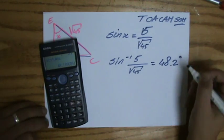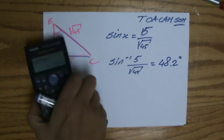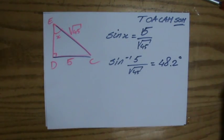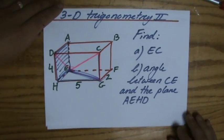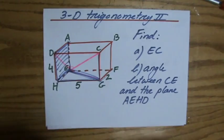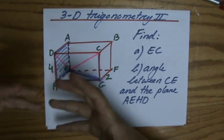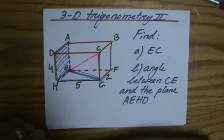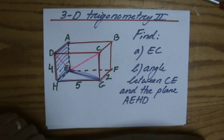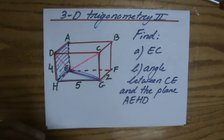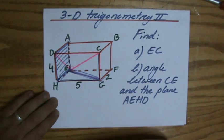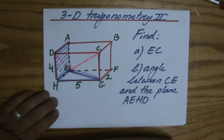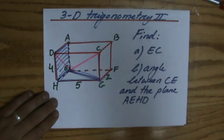48.2 degrees. So whenever you are dealing with trigonometry in three dimensional situations, you have to decide upon a plane and translate the question into a two dimensional situation. You're going to find a plane where your question is taking place in, and on many occasions you have to use Pythagoras theorem to calculate the length of those diagonals. I hope that was useful, otherwise leave me a message and I'll do a couple more questions for you.